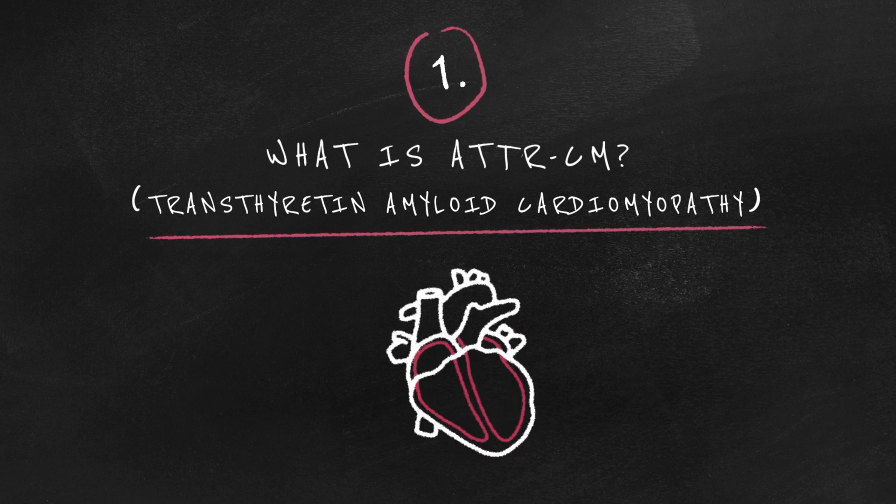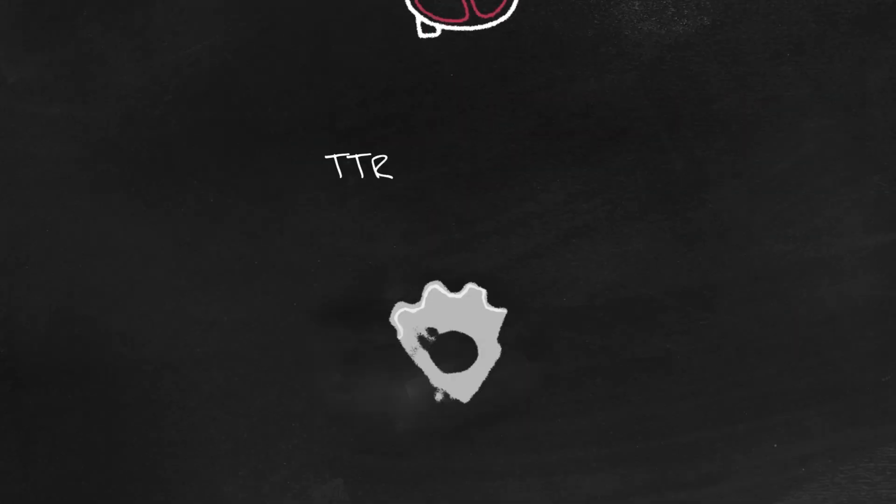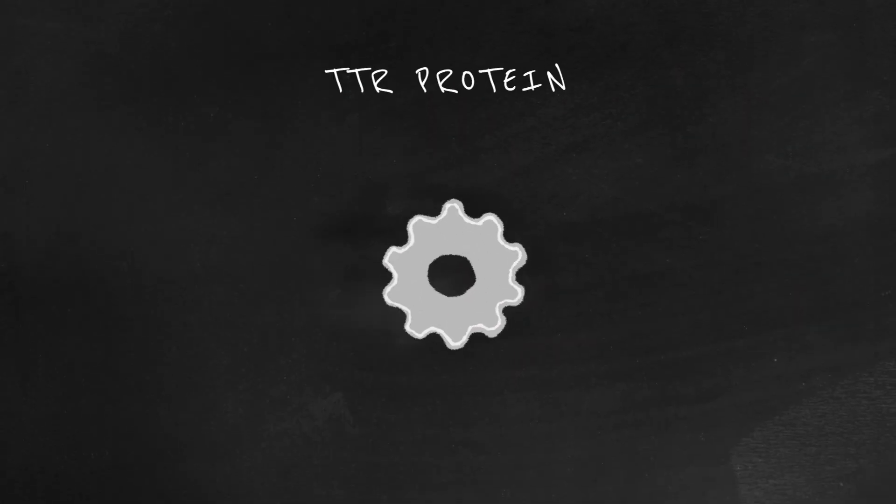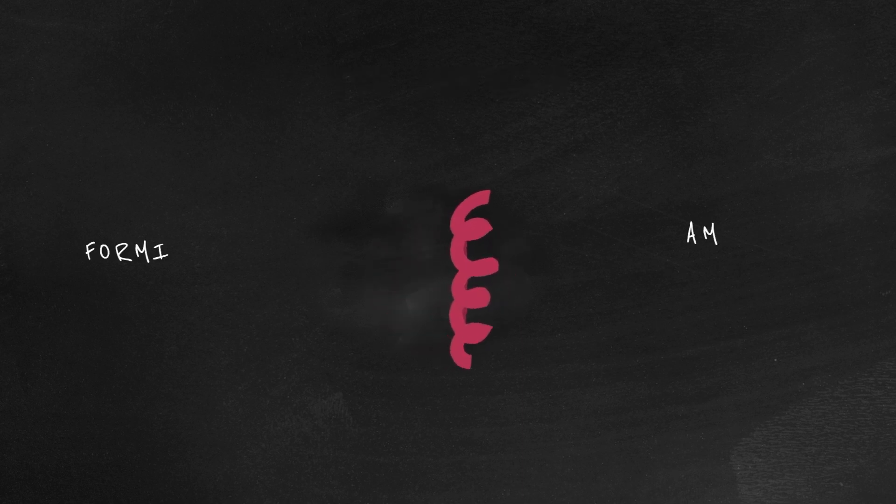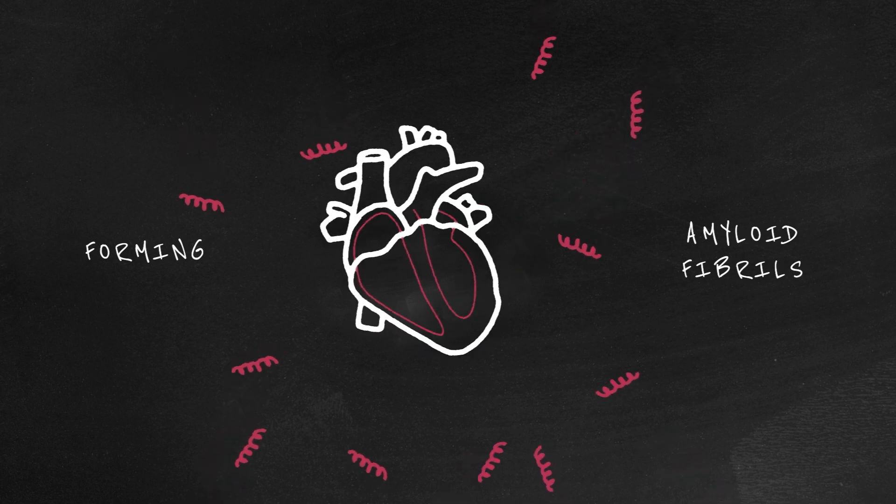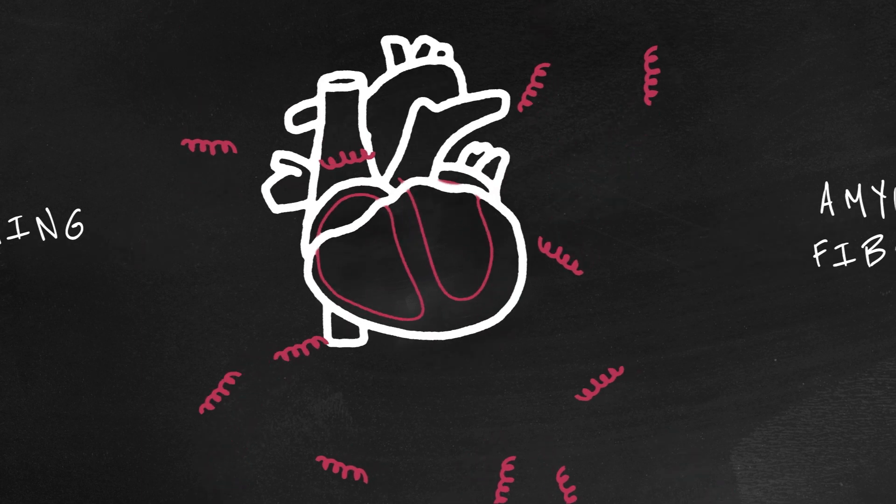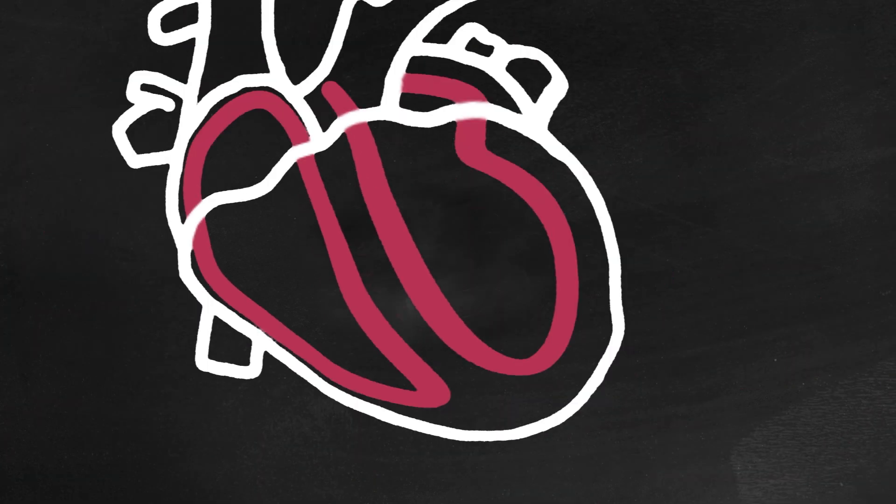Transthyretin amyloid cardiomyopathy, or ATTR-CM for short, occurs when TTR falls apart, misfolds and the smaller pieces then clump together, forming amyloid fibrils which can deposit in the heart, causing it to become thick and stiff, and impacting its ability to function properly.